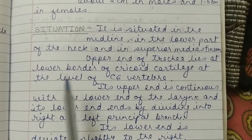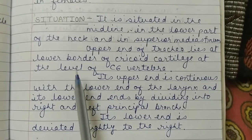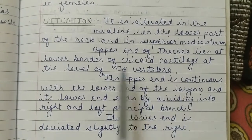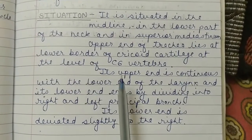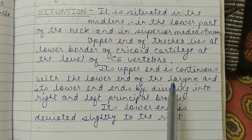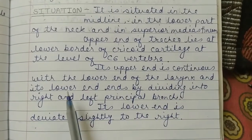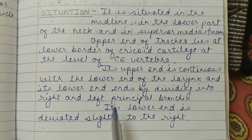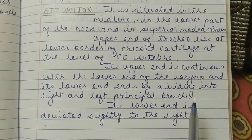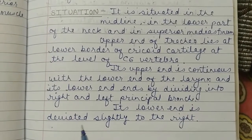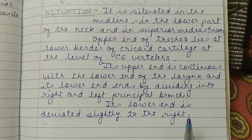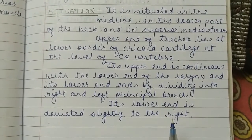The upper end of trachea lies at the lower border of cricoid cartilage at the level of C6 vertebra, and is continuous with the lower end of the larynx. Its lower end divides into right and left principal bronchi. Trachea is in the median position, but its lower end is slightly deviated to the right.